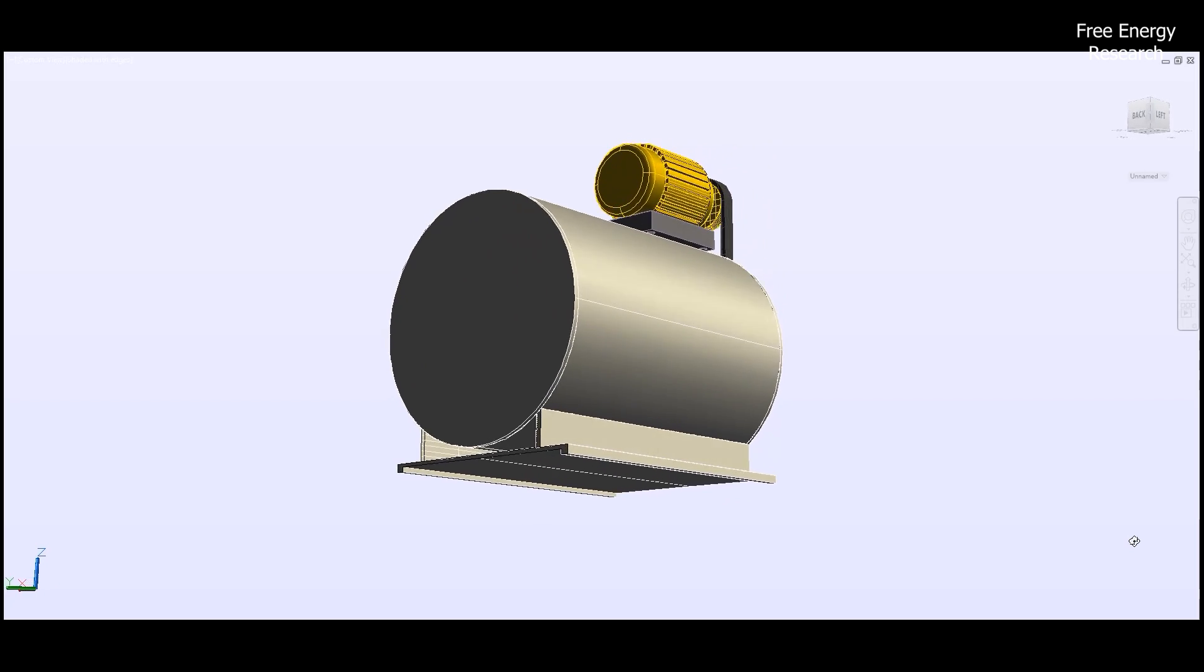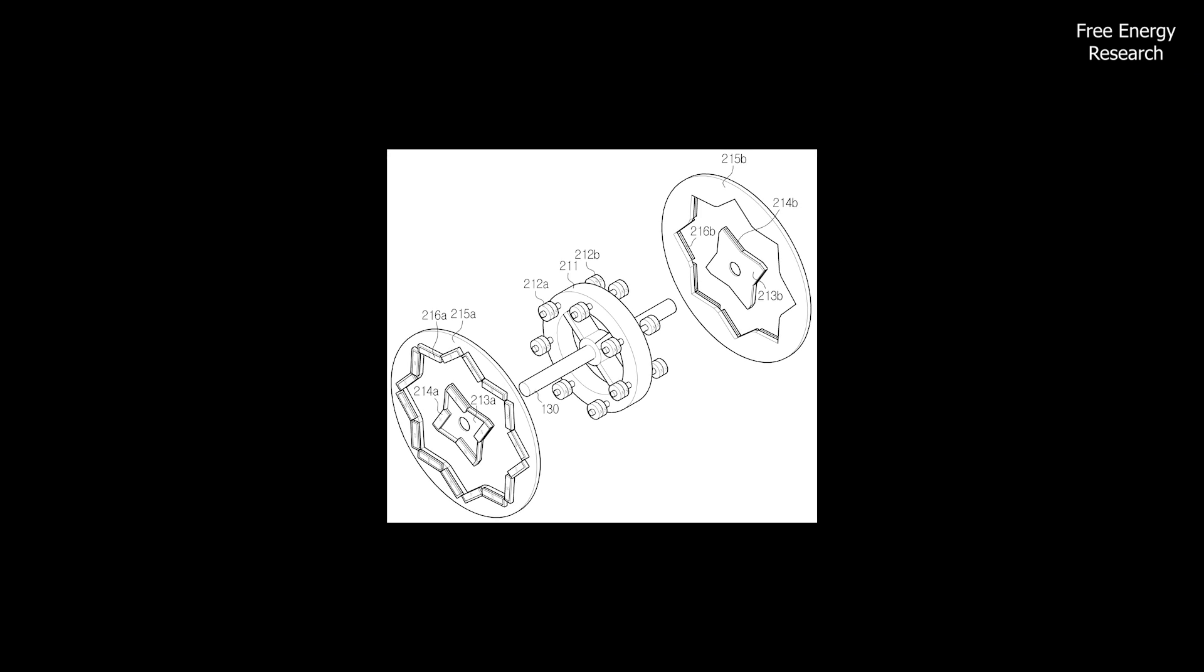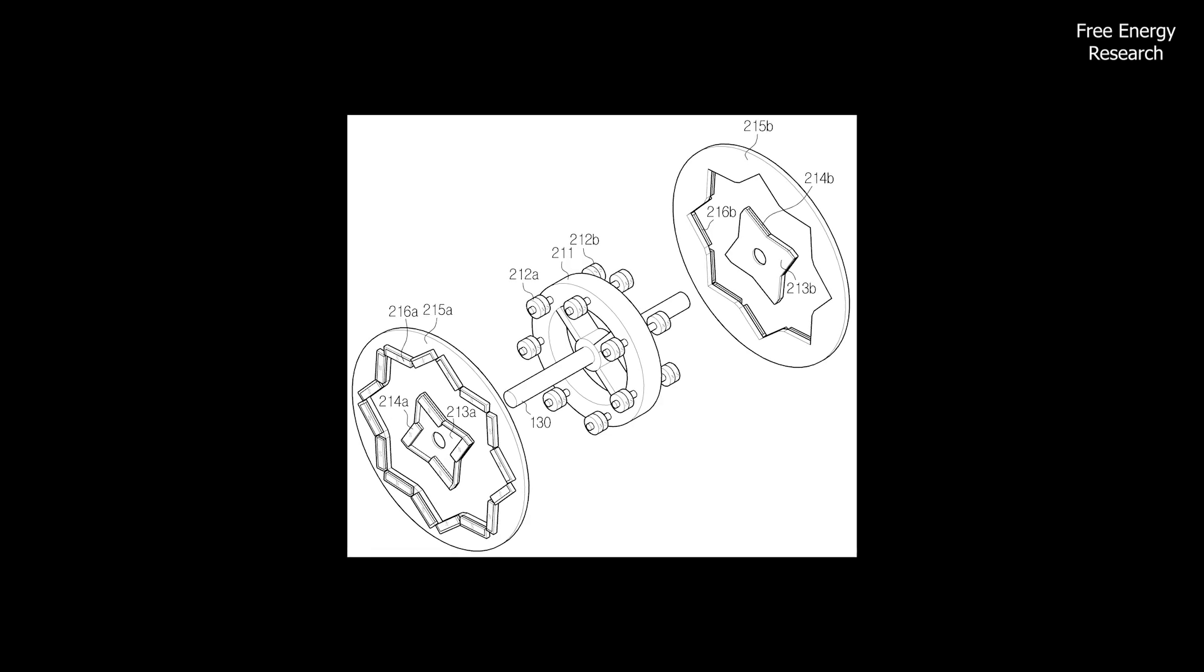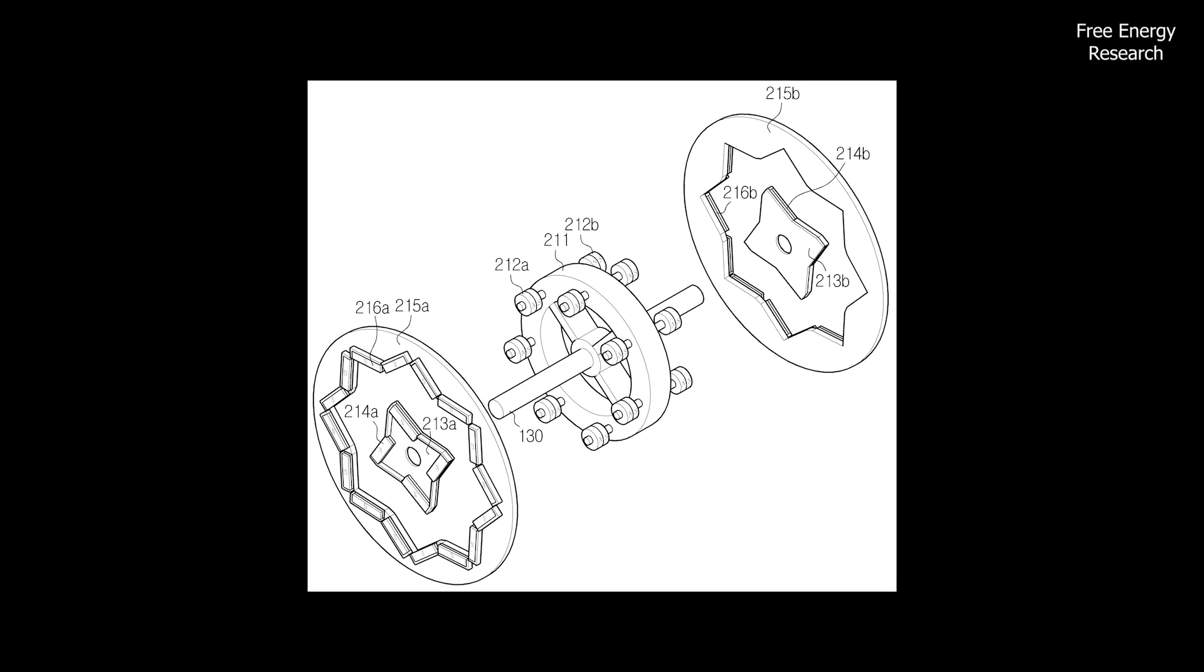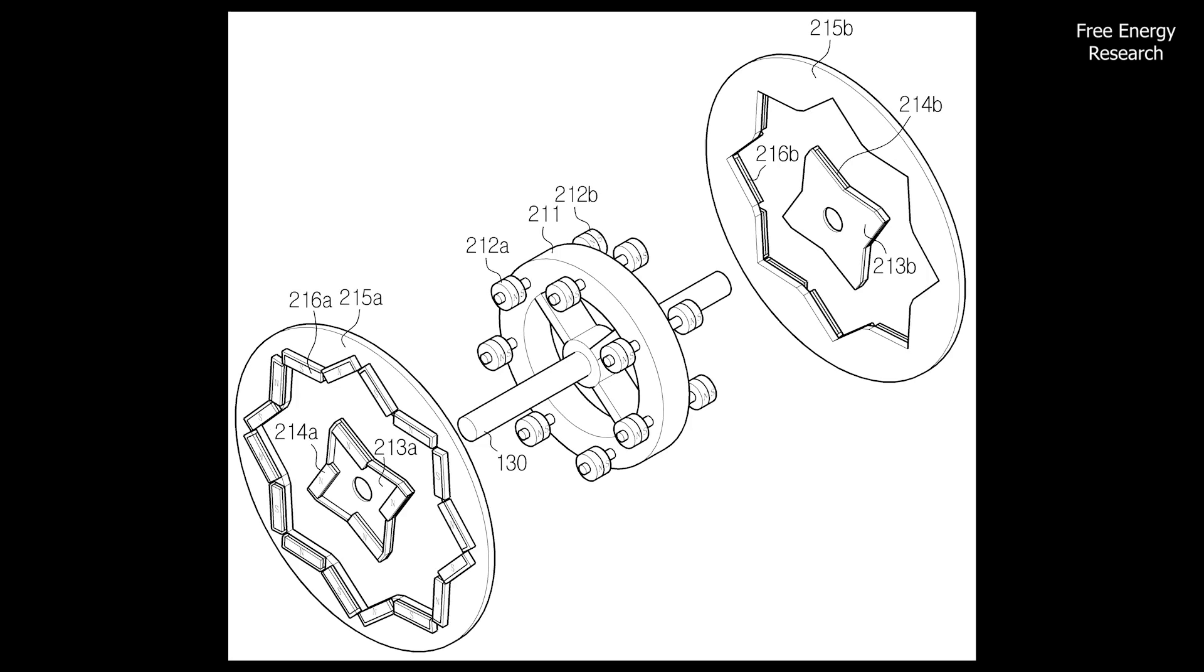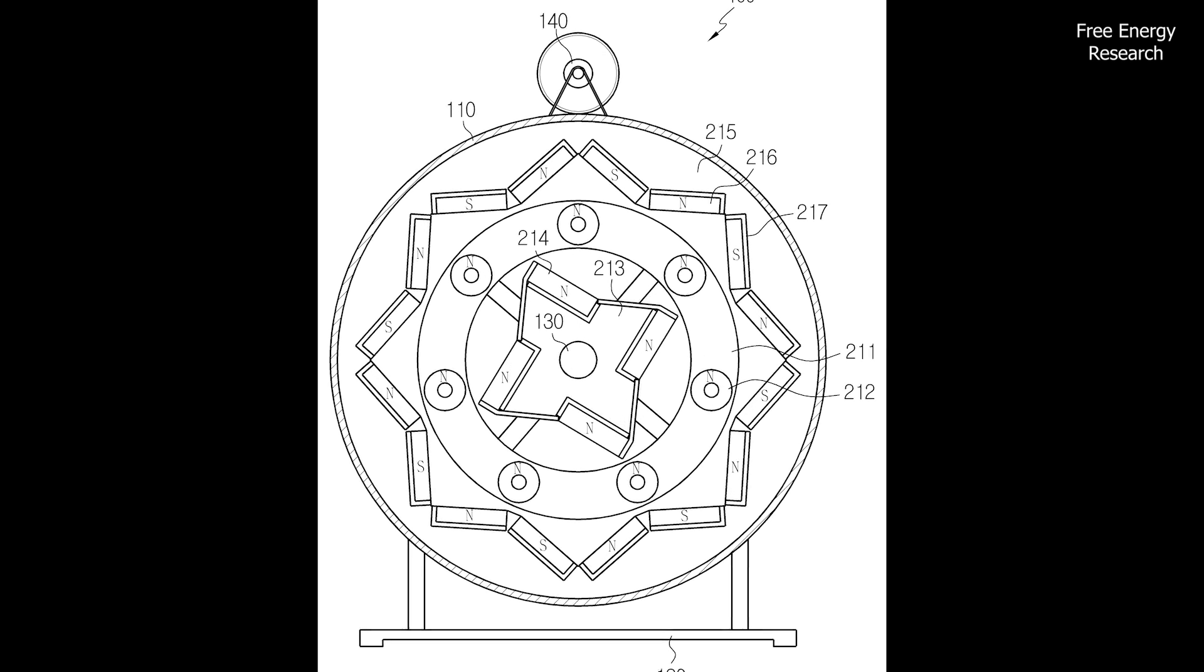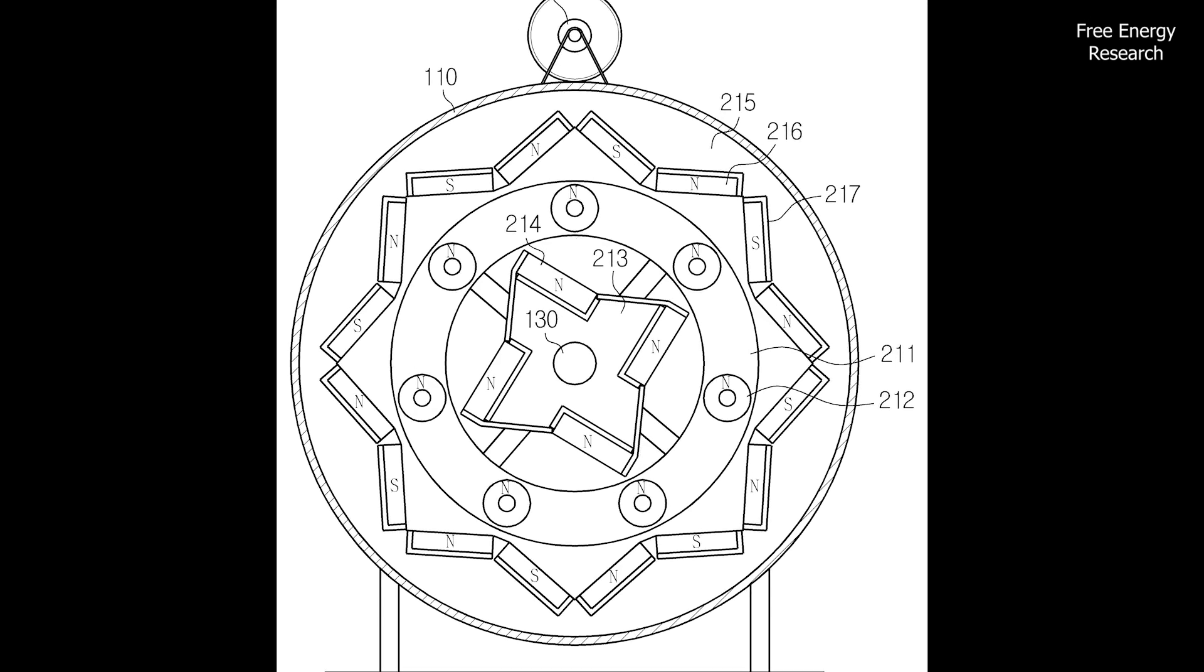Now, let's delve deeper into the working principles of this groundbreaking invention. The energy generating assistance device operates by creating a magnetic field interaction between the rotating member and the first and second guide members. The strategic placement of magnets, each with carefully selected polarities, results in a dynamic interplay of forces.